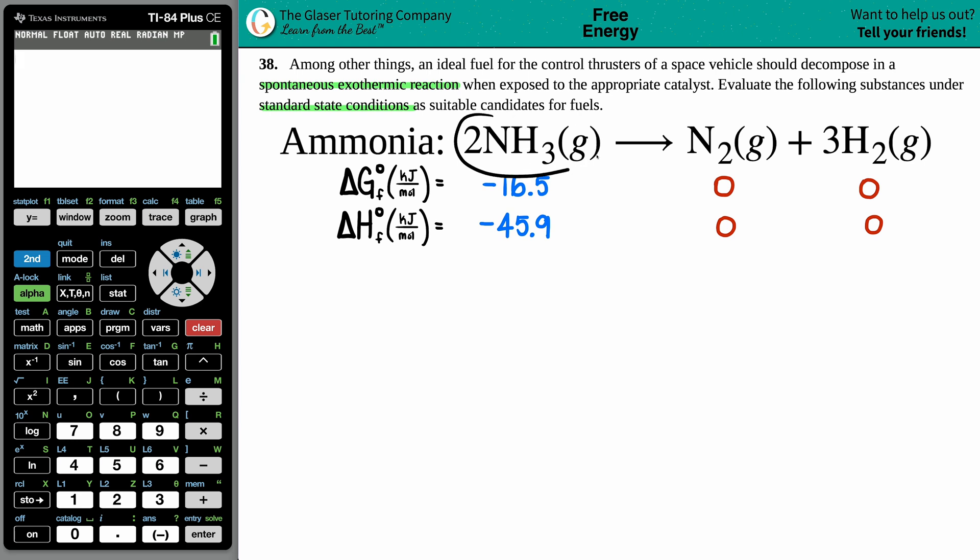They give us the balanced equation: 2NH3 gas decomposes into N2 gas plus 3H2 gas. In order for this question to work, we have to confirm that it's going to decompose in a spontaneous exothermic manner. The first thing we need to make sure is that this decomposition is going to be spontaneous.